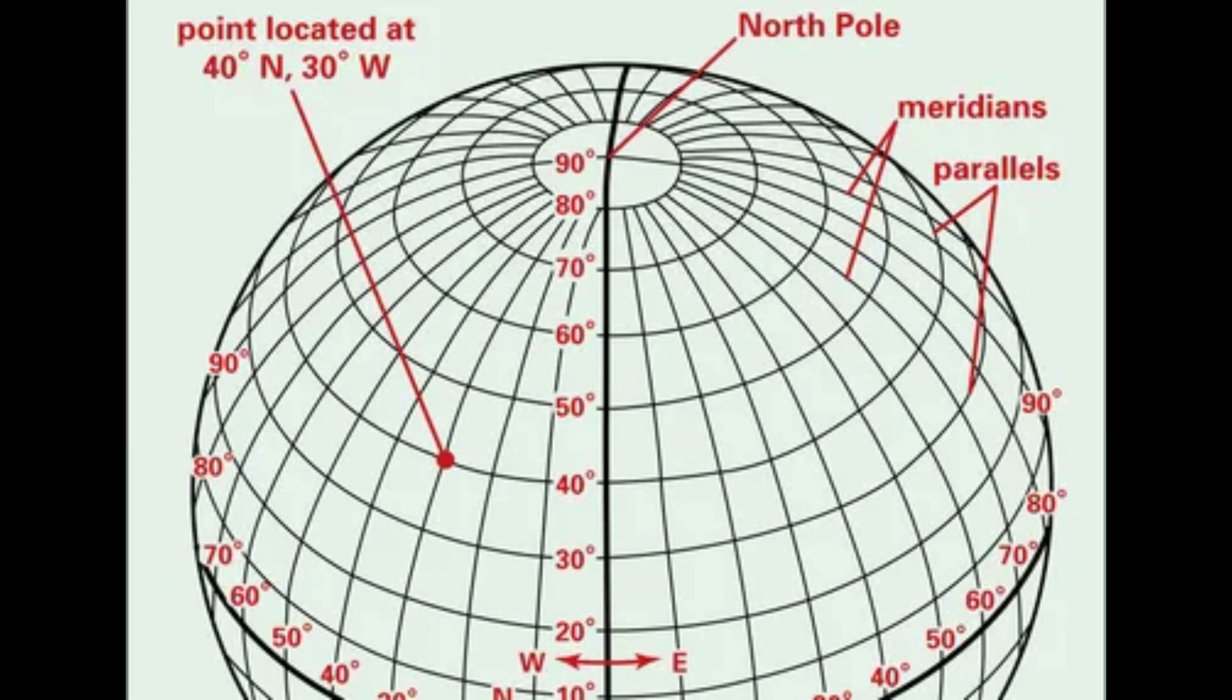Moving north of the equator, each line of latitude increases by one degree. Therefore, there are lines of latitude representing 1, 2, 3 degrees and so on up to 90 degrees. This image displays the 10, 20, 30, 40, 50, 60, 70, 80, and 90 degree lines of latitude above the equator.